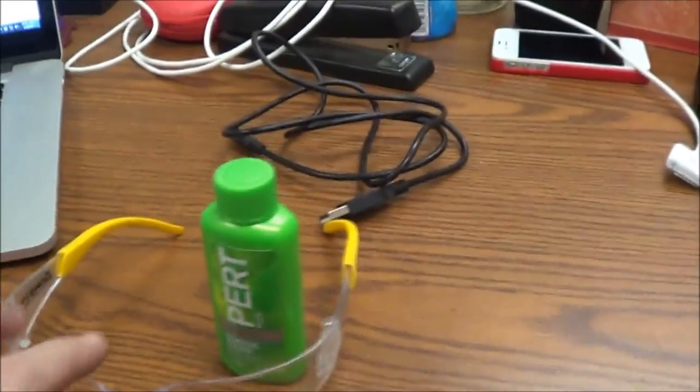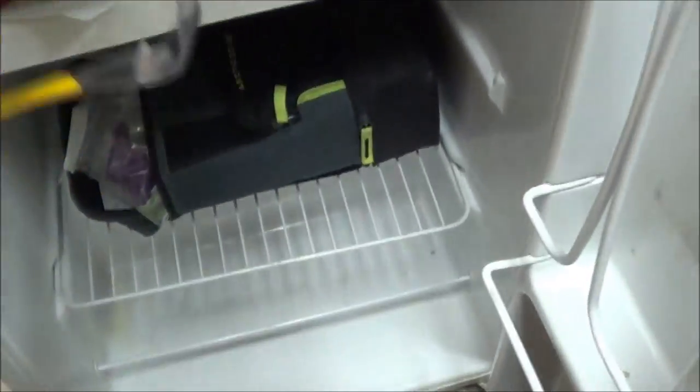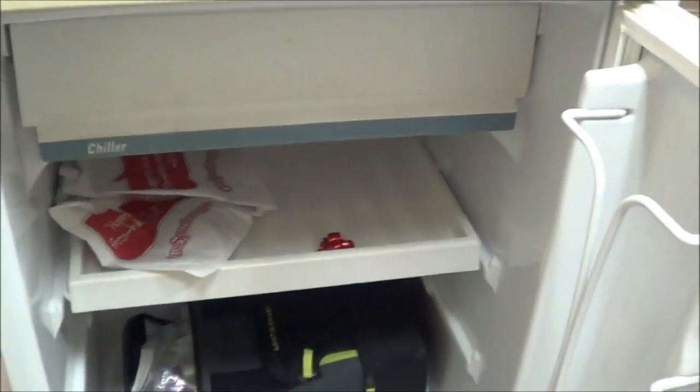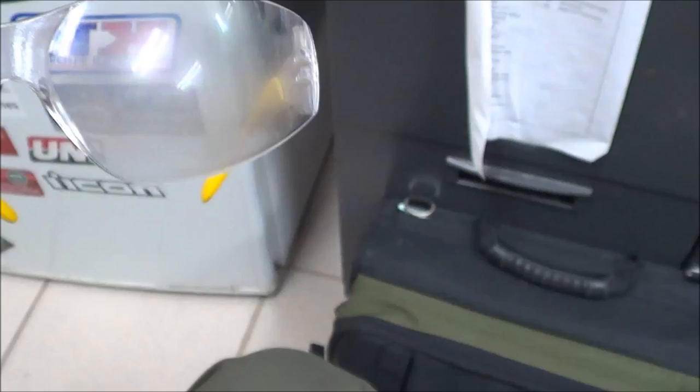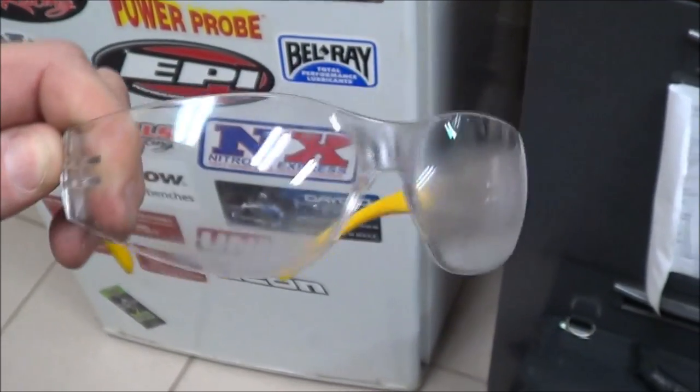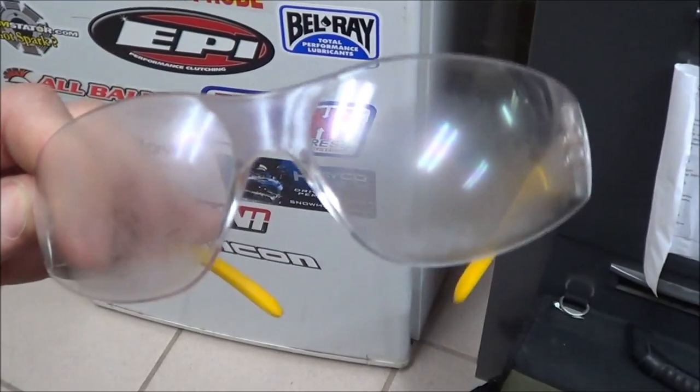First off, we're going to try and fog them up and stick them in an environment. Got a little freezer here to prove that they will fog up. So we'll see what that looks like. All right, got a pair of safety glasses here. You can see they're fogged up, fogging pretty easy. Just stuck them in the fridge there to kind of chill them up.